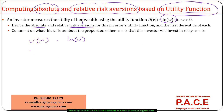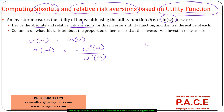We know the formulas: the absolute risk aversion is minus u double dash of w divided by u dash of w — that is, minus the second derivative divided by the first derivative. Similarly, the relative risk aversion is the absolute risk aversion multiplied by w. We have already discussed these formulas and can directly use them.